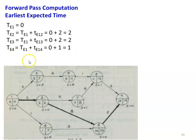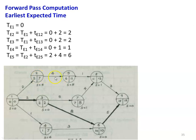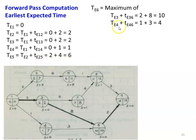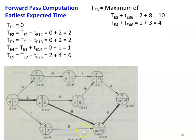Then TE4: there is only one incoming arrow, so TE4 equals TE1 plus t(1,4) equals 0 plus 1 equals 1. Then TE5: again only one incoming arrow, so TE5 equals TE2 plus t(2,5) equals 2 plus 4 equals 6. And TE6: there are two incoming arrows, so we take the maximum. TE6 equals maximum of (TE3 plus t(3,6) equals 2 plus 8 equals 10) and (TE4 plus t(4,6) equals 1 plus 3 equals 4). The maximum value is 10, so we assign 10 here.